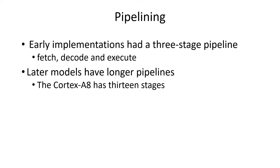The early models of the ARM processor had a three-stage pipeline. Later models, as it evolved through many different versions, now have a 13-stage pipeline.